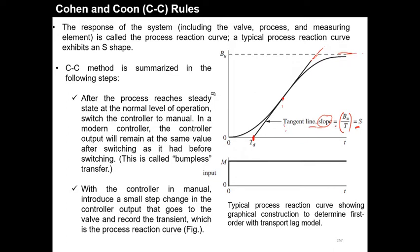The response of the system including the valve, process, and measuring element is called the process reaction curve. A typical process reaction curve exhibits an S-shape. After the process reaches a steady state at normal operating level, switch the controller to manual mode first. Once at steady state, remove the controller and switch to manual mode.